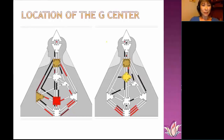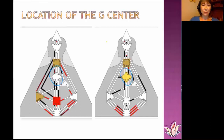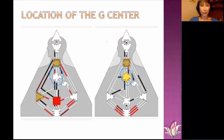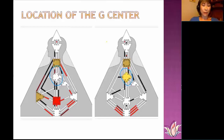This is the G Center — it's this diamond that, if you were to correlate the body graph to your anatomical body, is basically in the center of your chest. In the Hindu chakra system, which these energy centers are derived from, this would be akin to your heart chakra. The G Center can show up in two ways: undefined, which is when it's white, or defined, which is when it's colored in.